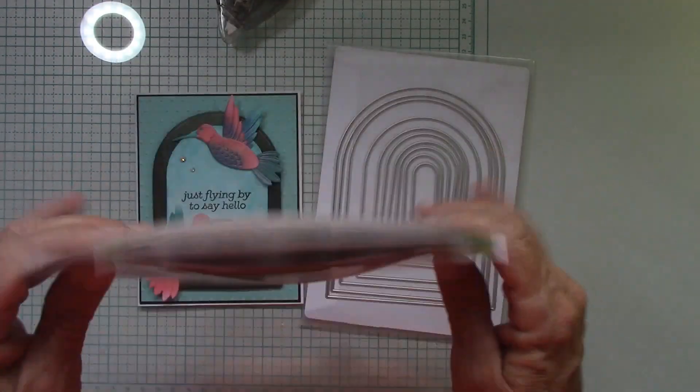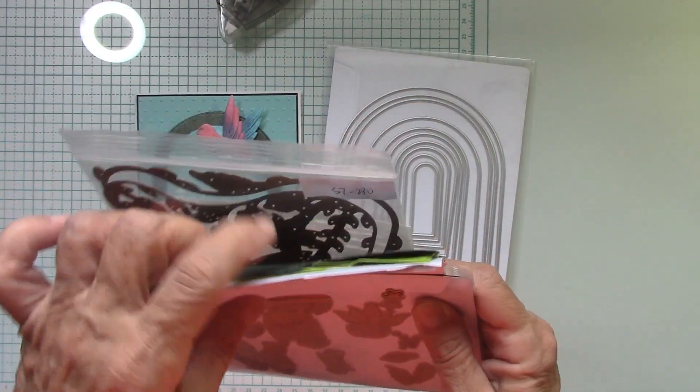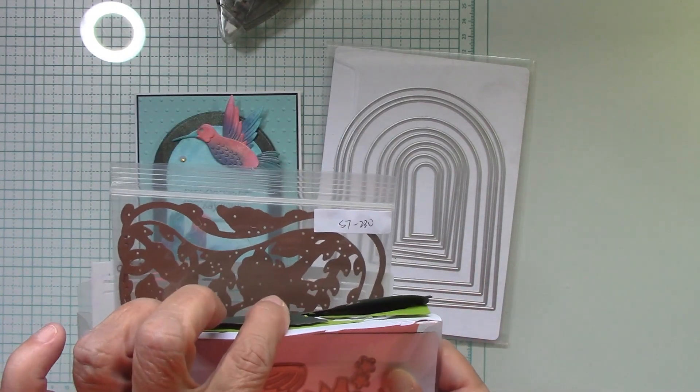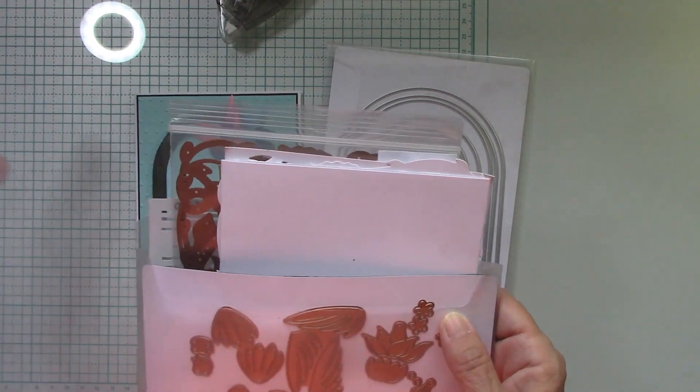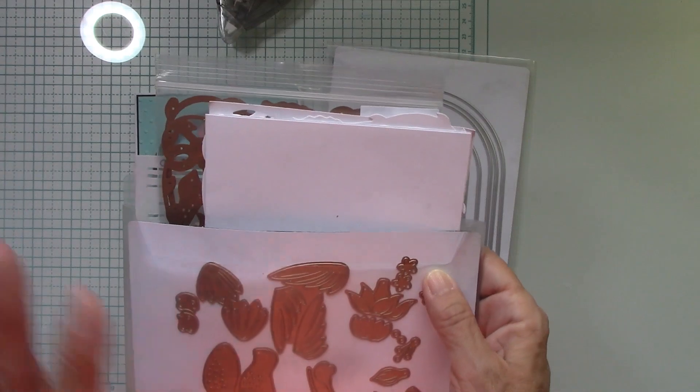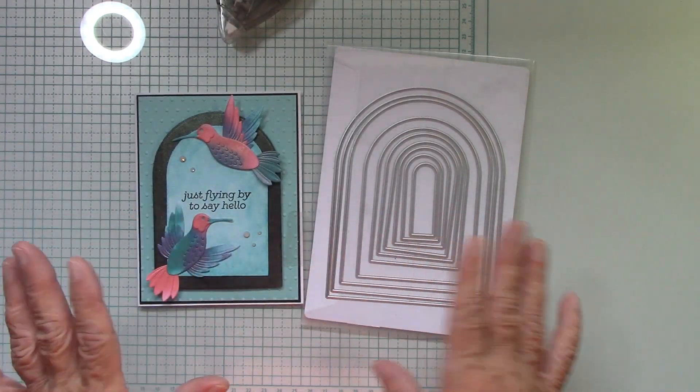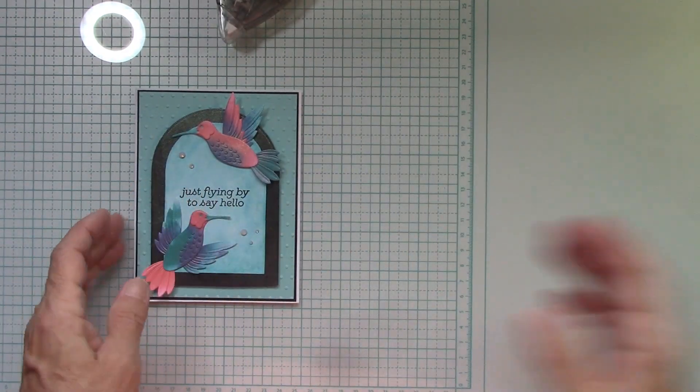I'm using the BB Cameron's hummingbird collection. When they send us things, it comes all in just baggies because we are influencers for them. But you will get everything in the correct packaging. So I'm just excited to do this today with you guys.